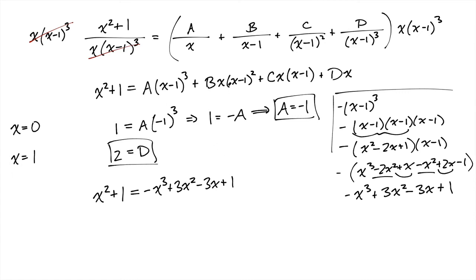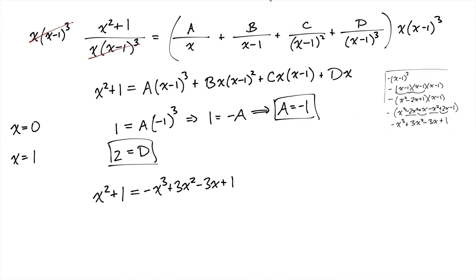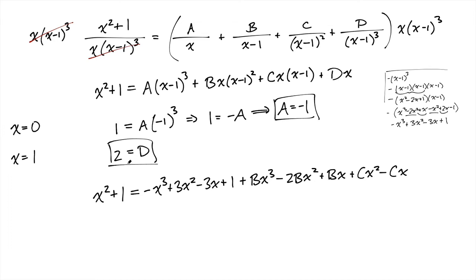That was just this one term. We also need to expand the other three terms. The B term, expanding that: you get Bx cubed minus 2Bx squared plus Bx. Then we can expand the C term: we get plus Cx squared minus Cx. And then we have plus Dx, and we know D is 2, so that's plus 2x.